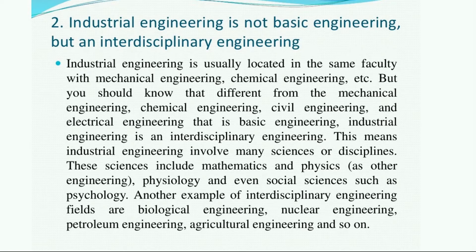You should know that industrial engineering is different from mechanical, chemical, civil, and electrical engineering, which are basic engineering. Industrial engineering is interdisciplinary engineering — it involves many sciences and disciplines including mathematics, physics, physiology, and even social sciences such as psychology. Other examples of interdisciplinary engineering fields include biological engineering, nuclear engineering, petroleum engineering, and agricultural engineering.